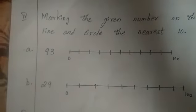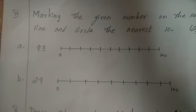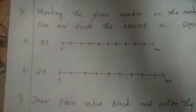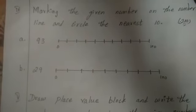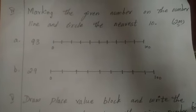Next, marking the given number on the number line and circle the nearest 10. You have to circle the nearest 10, children. First one is 93. Here I gave you 0, 100.